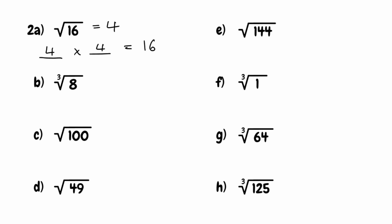For part b, we're looking for the cube root of 8. Finding the cube root is the inverse of cubing a number. We're looking for a number that when multiplied by itself three times gives us 8. That would be 2, because 2 multiplied by 2 is 4, and then multiplying by 2 again gives us 8. So the cube root of 8 is 2.